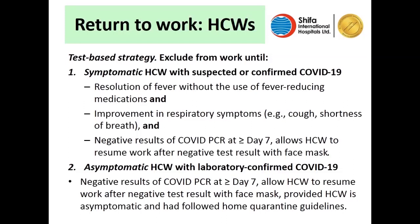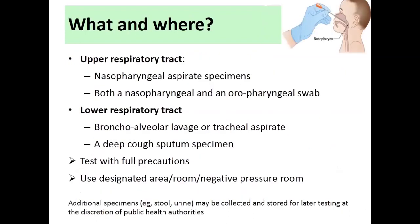Regarding what to test: respiratory specimens are needed, with nasopharyngeal swab as the preferred specimen. You can use both nasopharyngeal and oropharyngeal together in the same kit. Lower respiratory tract specimens such as bronchoalveolar lavage or tracheal aspirate have higher yield, as does deep cough sputum. Remember to collect samples with full precautions in a designated area, preferably a negative pressure room.